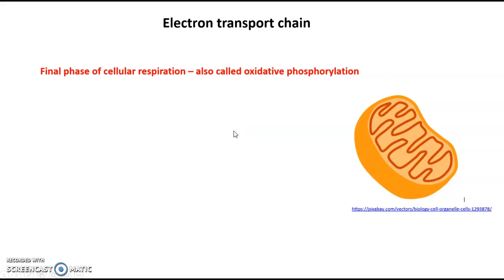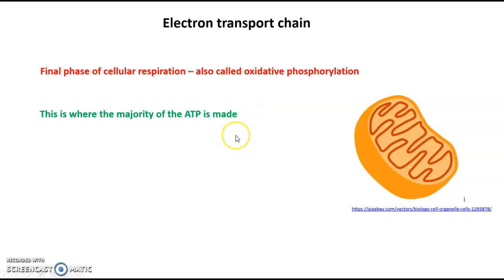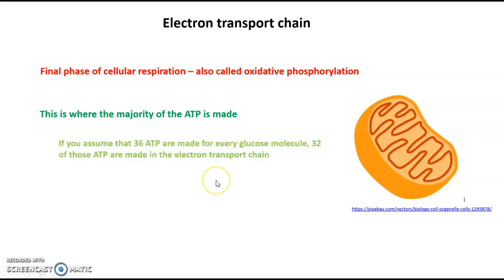The electron transport chain is the final phase of cellular respiration. It's also called oxidative phosphorylation, but I'm going to stick with the term electron transport chain because I think it's more explanatory. This is where the majority of the ATP is made in the cellular respiration process. If you assume that 36 ATP are made for every glucose molecule, 32 of those ATP are made in the electron transport chain.